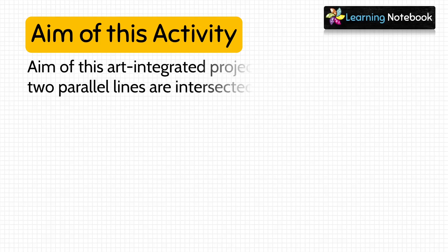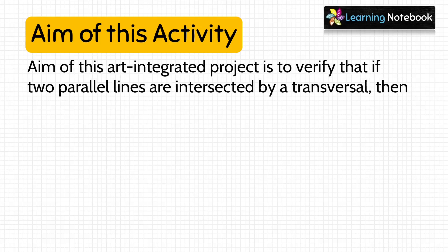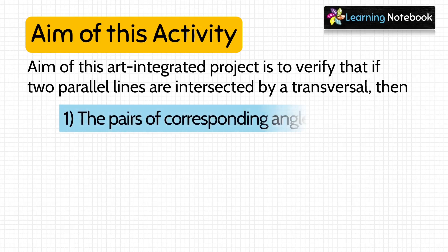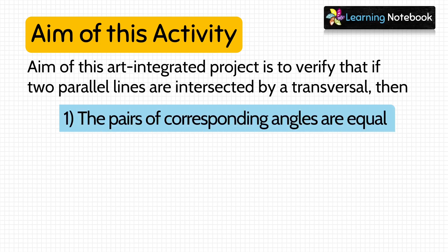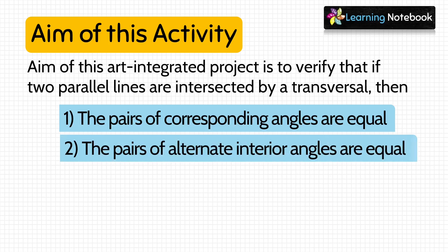The aim of this art integrated project is to verify that if two parallel lines are intersected by a transversal, then: first, the pairs of corresponding angles are equal; and second, the pairs of alternate interior angles are equal.